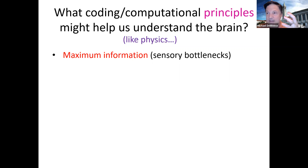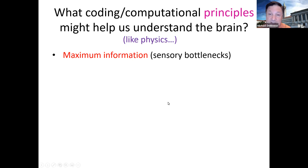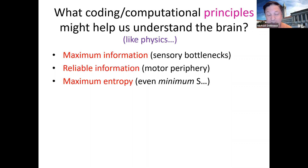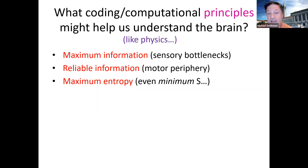Let me give a laundry list of principles, sort of like physics principles we might apply to understanding how the brain works. One is maximum information. There is an information bottleneck: you go from roughly 100 million photoreceptors in your two eyes, through processing, through your optic nerve — only about a million lines going up to your brain, a hundredfold reduction. So maybe you want to maximize the information through that bottleneck. It turns out that is a good idea and explains a lot about coding in different sensory systems.